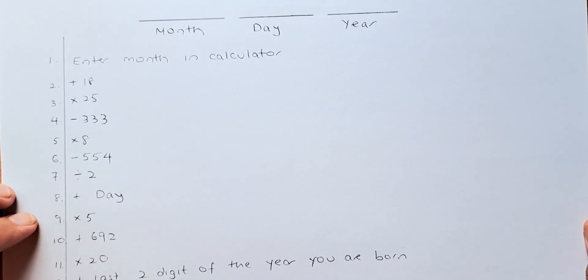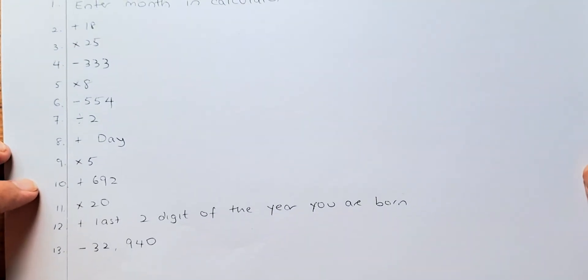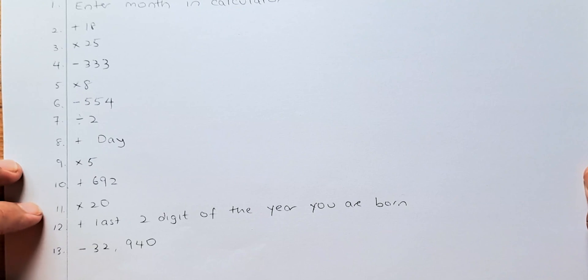You're going to multiply by 5. You're going to then add 692. Then followed by multiply by 20.